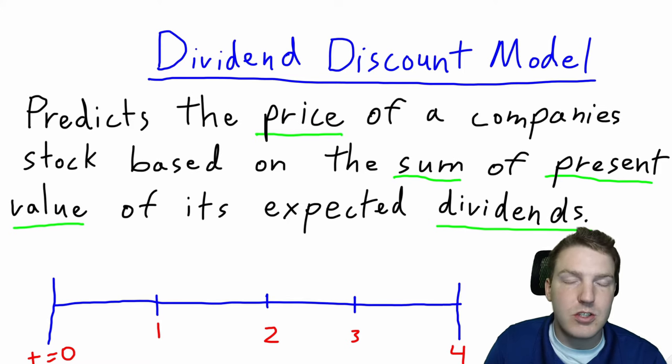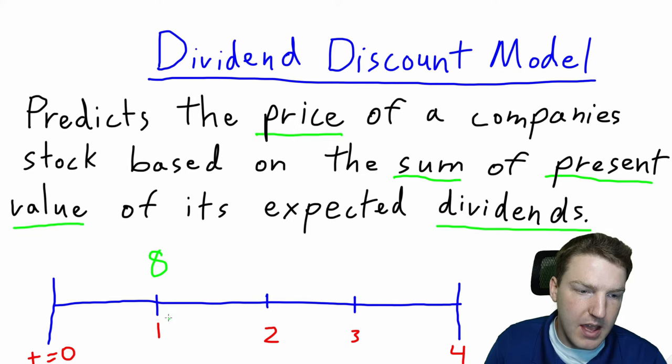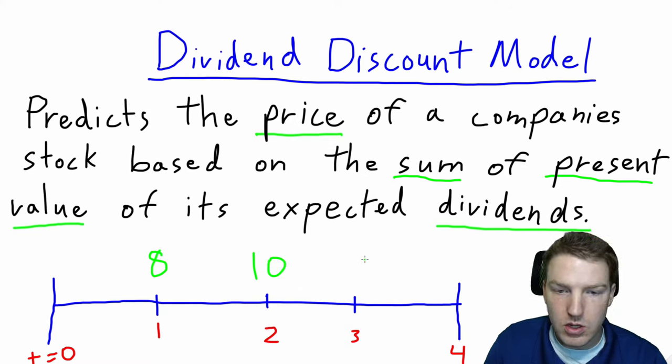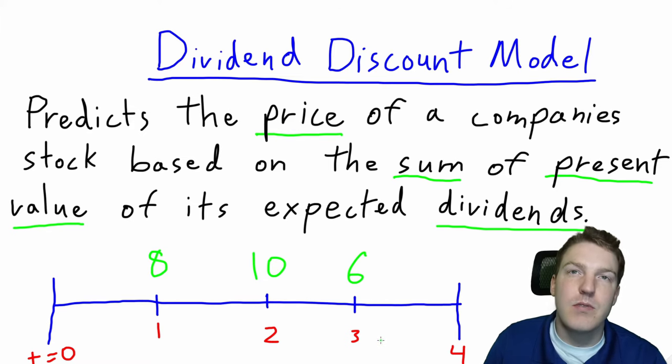You see t equals zero, that just means time equals zero. So this point on this timeline represents today. Let's say we're analyzing a stock that we expect to pay $8 dividend at the end of year one, a $10 dividend at the end of year two, a $6 dividend at the end of year three, and a $12 dividend at the end of year four.